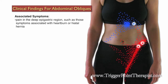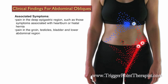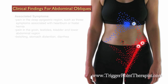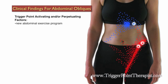Here are the clinical findings for the abdominal oblique trigger points. Clients will typically complain of pain deep in the epigastric regions, sometimes associated with heartburn or hiatal hernia, groin pain, pain in the testicles, pain in the bladder area, and sometimes pain in the lower abdominal region in general. Oftentimes clients complain of belching, stomach distension, and diarrhea.